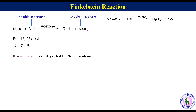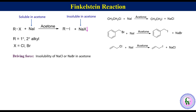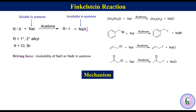For example, the reaction of ethyl chloride with sodium iodide in acetone produces ethyl iodide. The reaction of benzyl chloride with sodium iodide produces benzyl iodide. The reaction of allyl chloride with sodium iodide gives allyl iodide, and the reaction of chloroacetone with sodium iodide gives iodoacetone.